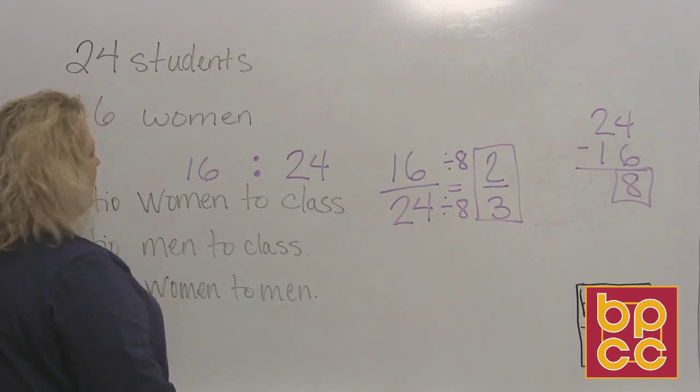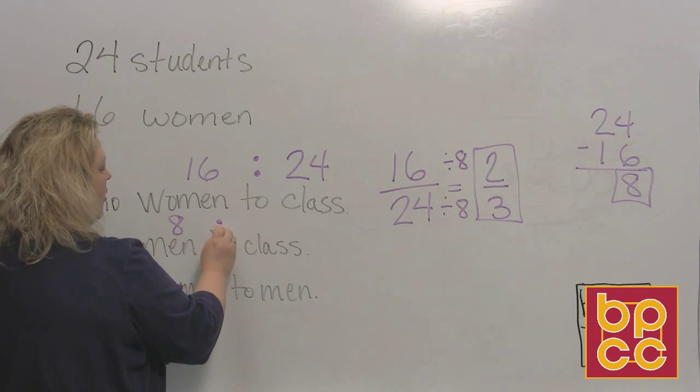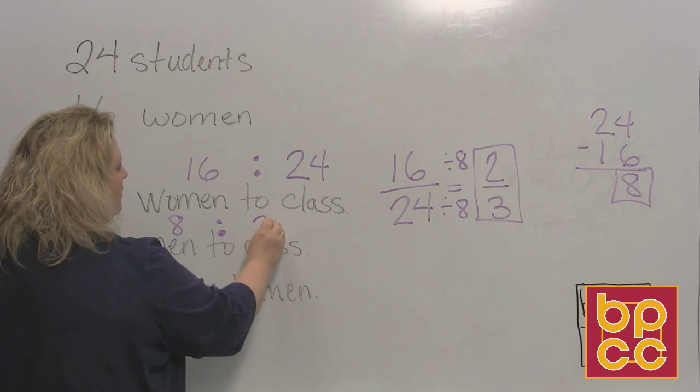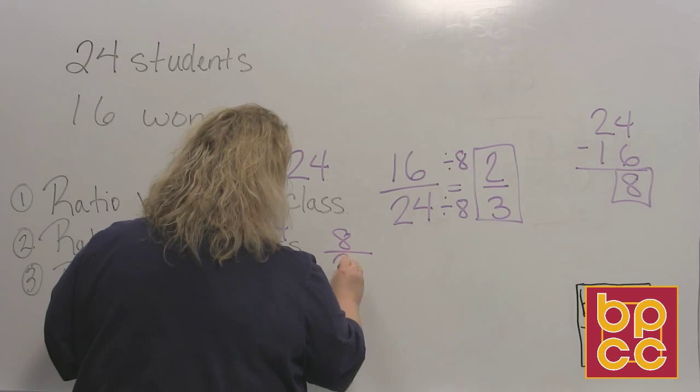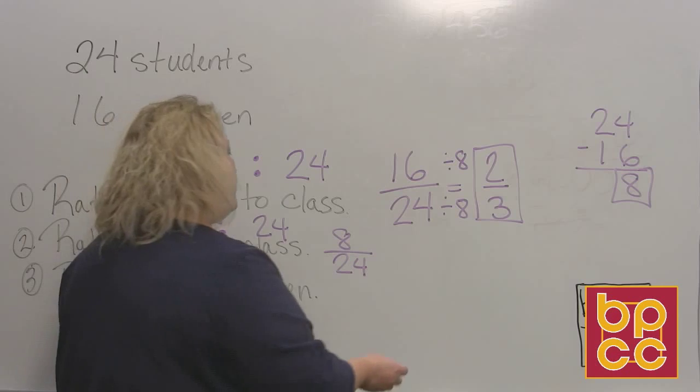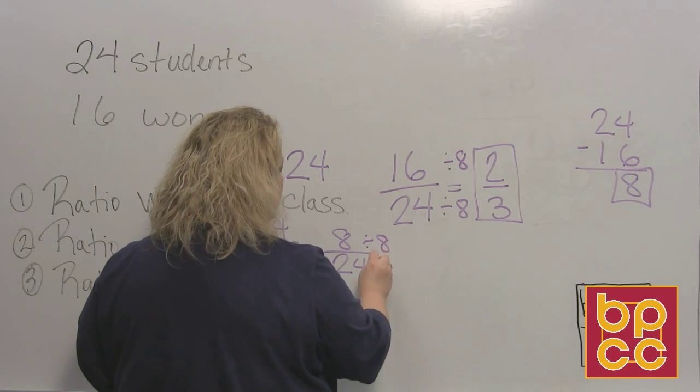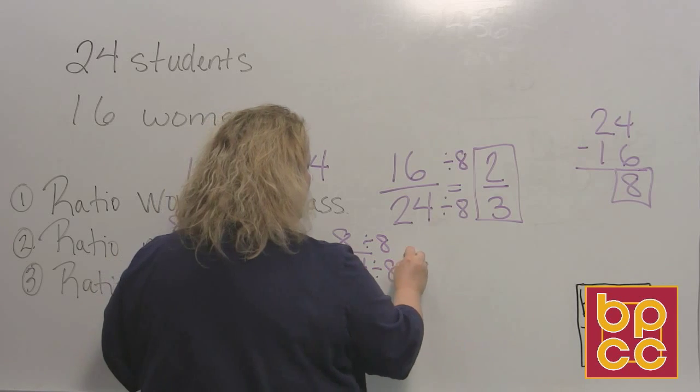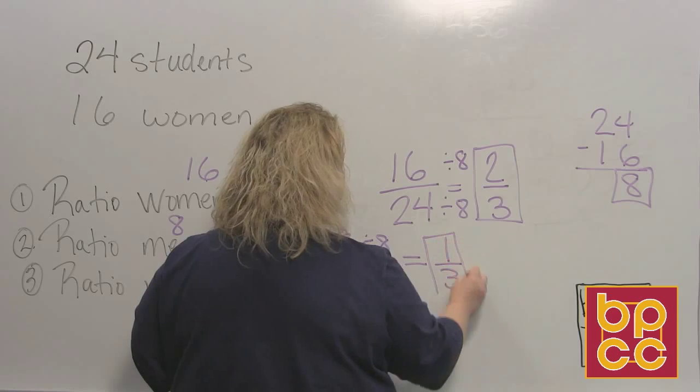So the ratio of men to the people in the class would be 8 with your colon and 24. Or if you write it as a fraction, it would be 8, fraction bar 24. And then that you would also want to write and leave it in lowest terms, so you would divide those by 8 as well. And your reduced fraction would be 1 third.